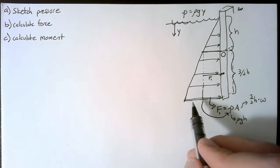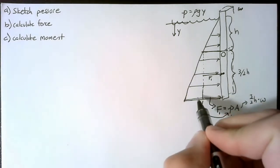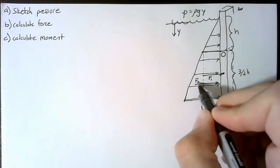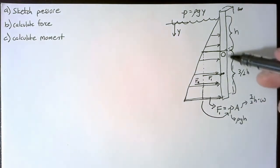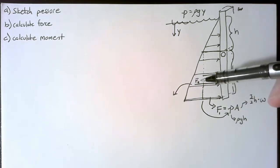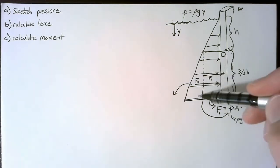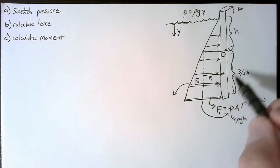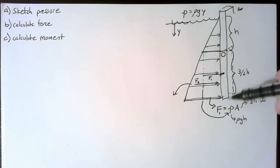This other force is triangular. It acts one third of the way up. So we have some F2 that's acting at h down. To find the force of a triangular distributed load, we just take the average of these two pressures, and we multiply that by our area.